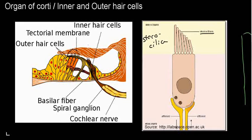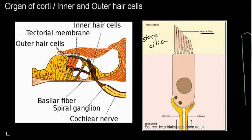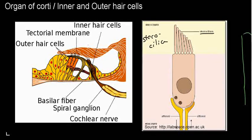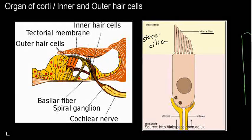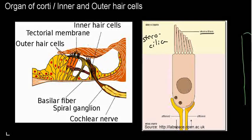There are three rows of outer hair cells and one row of inner hair cells. The difference between the two is that the inner hair cell does not have a contact surface with the tectorial membrane, because the tectorial membrane ends before reaching them and there's no real contact surface between the two. Whereas with the outer hair cells, there are contact surfaces.